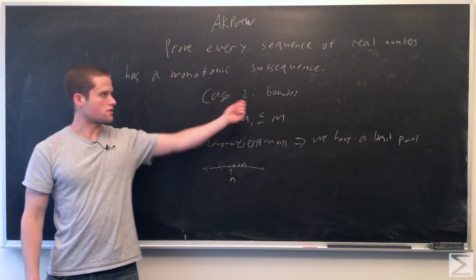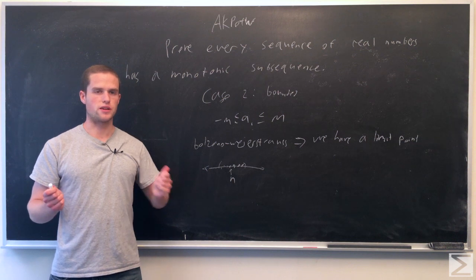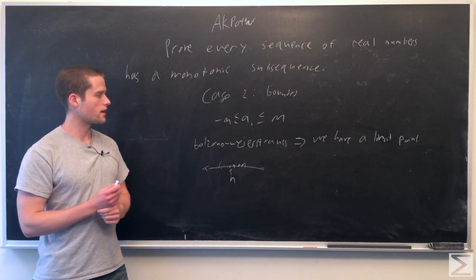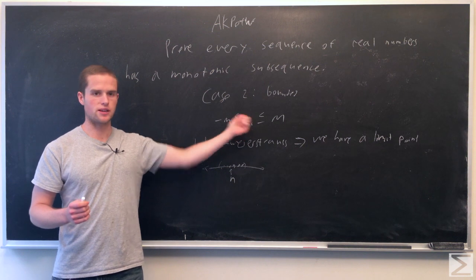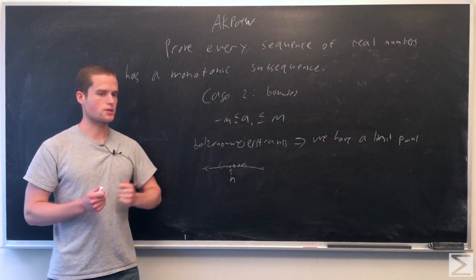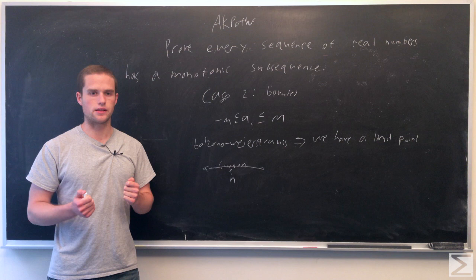Now assume our sequence is bounded, so all the points are between some numbers minus m and m. In this case, A_i is between minus m and m, so that sequence is a subset of a compact interval.